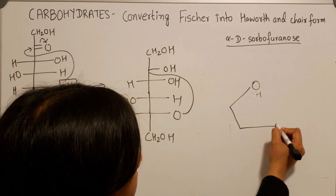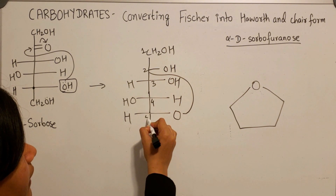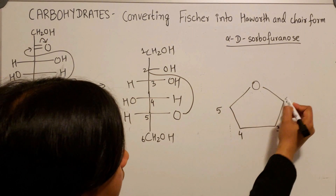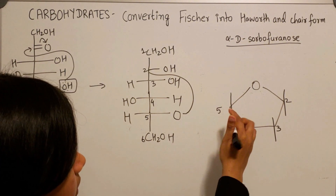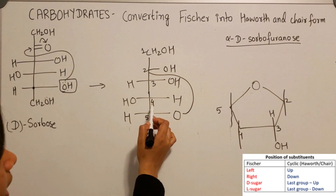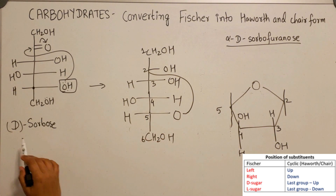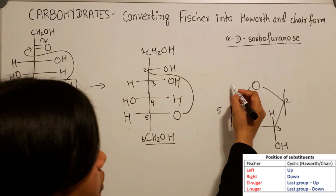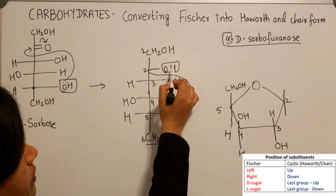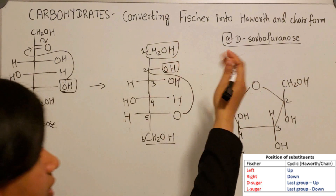Draw a five-membered ring containing oxygen — the furanose form — and count the carbons: one, two, three, four, five, six. Carbon two is the anomeric center, so count two, three, four, five. Draw all the up and down bonds and use the table rule to fill in substituents. Carbon three — OH right goes down, H on top. Carbon four — OH on the left, so OH goes up and H goes down. Carbon five — since it is a D sugar, the CH2OH last group goes on top. For the alpha form, the hydroxy group at the anomeric position goes down, and the CH2OH group goes on top.